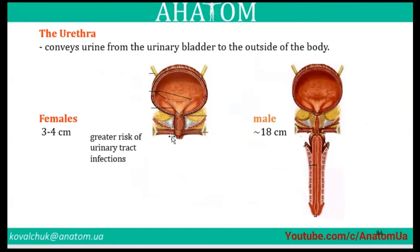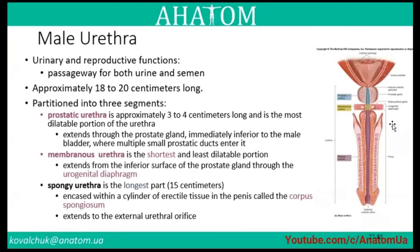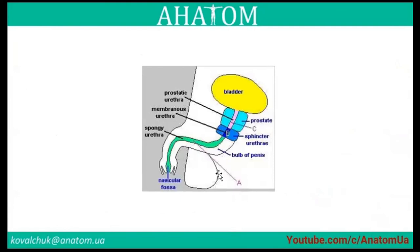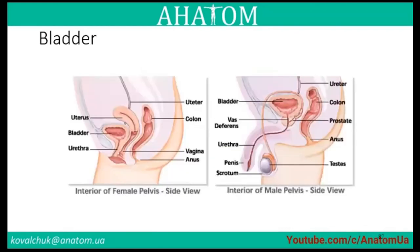The male urethra has both urinary and genital functions — it is a passageway for both urine and semen. It is approximately 18–20 cm long and has three parts: the prostatic urethra, the membranous urethra, and the spongy urethra, opening at the navicular fossa in the penis. The urethra's oblique entry into the bladder prevents backflow.